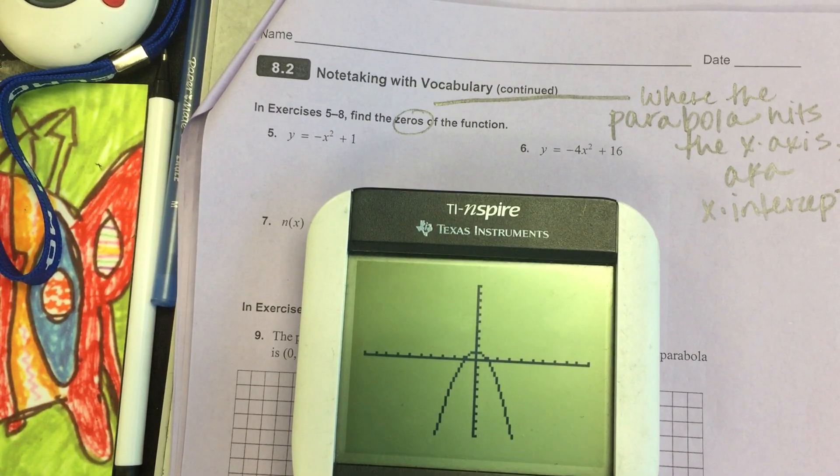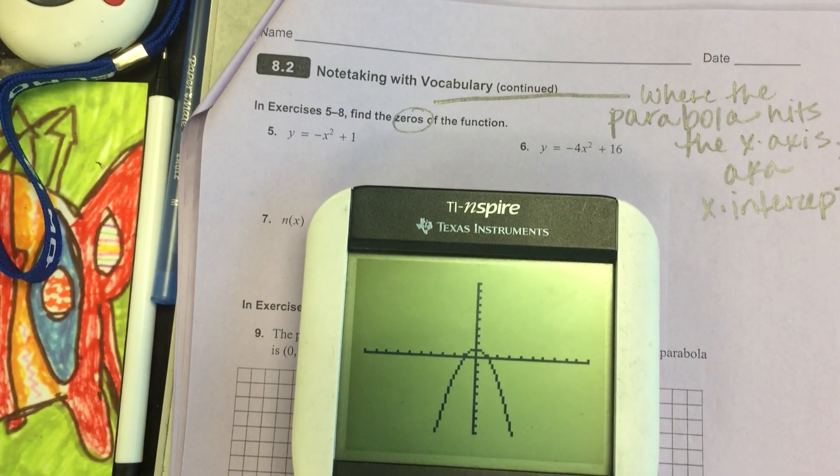Question is, where do we see it on this graph hitting the x-axis? Okay, let's just talk about the x values for that. I'm doing number 5, negative x squared plus 1. And so then, when we go to look to talk about the x-intercepts, somebody said they're at 0, 1 and 0, negative 1. We're just going to talk about these zeros or these x-intercepts as being negative 1 and positive 1.